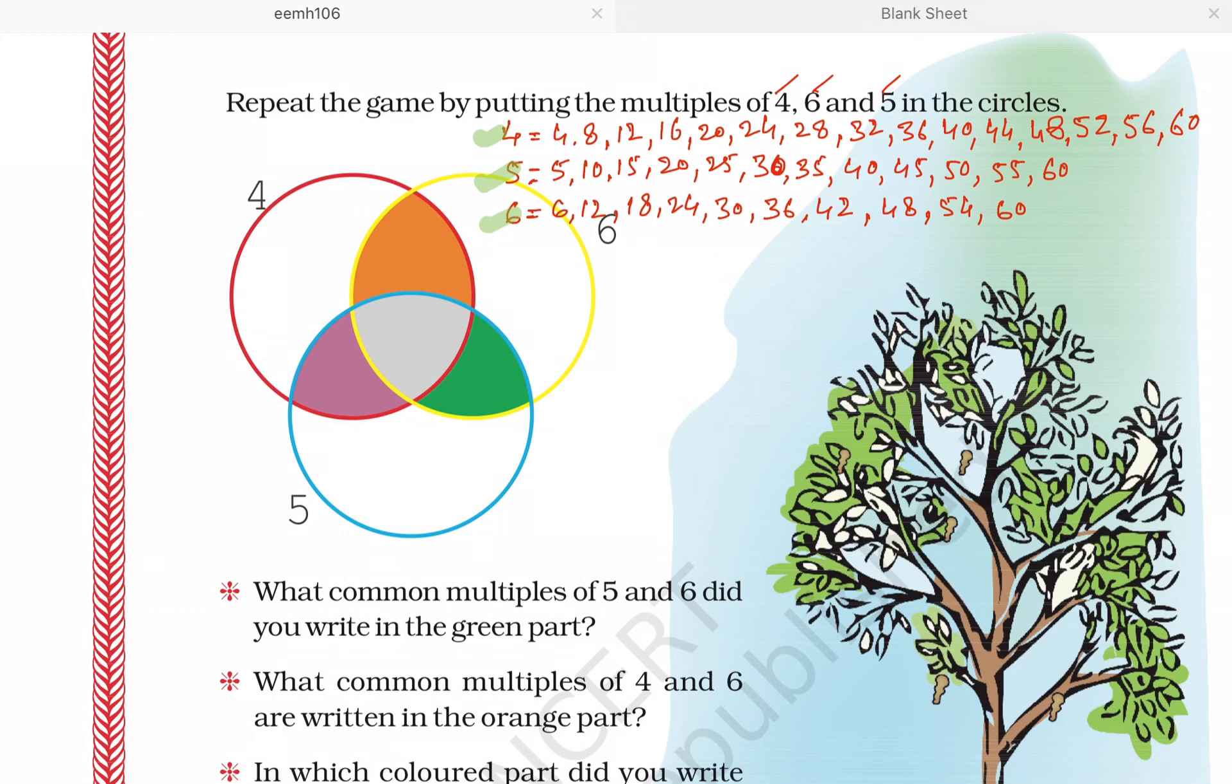28, and so on. The multiples of 5 are 5, 10, 15, 20, 25, 30, 35, and so on. And the multiples of 6 are 6, 12, 18, 24, 30, and so on.